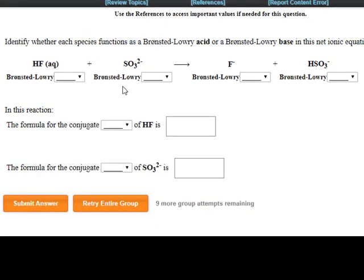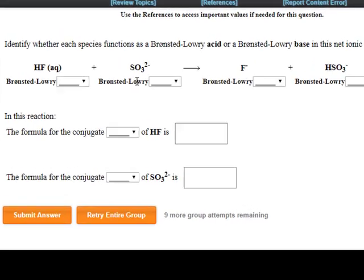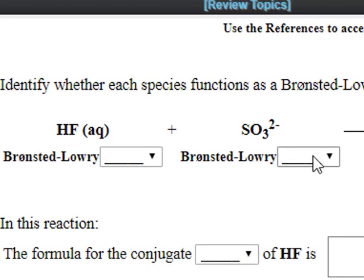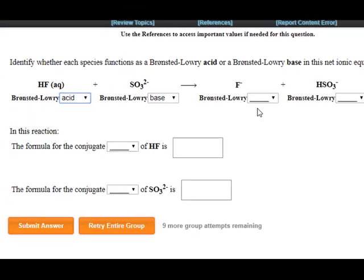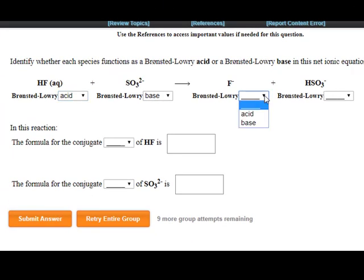Here's another situation where we have a formula not containing a hydrogen. Therefore, this must be the base, and this is the acid. Comparing left side to right side in the equation, because this has one less H than this, this must be the conjugate base of HF.